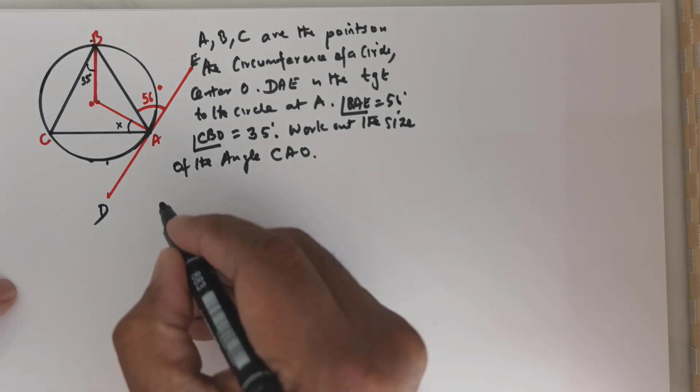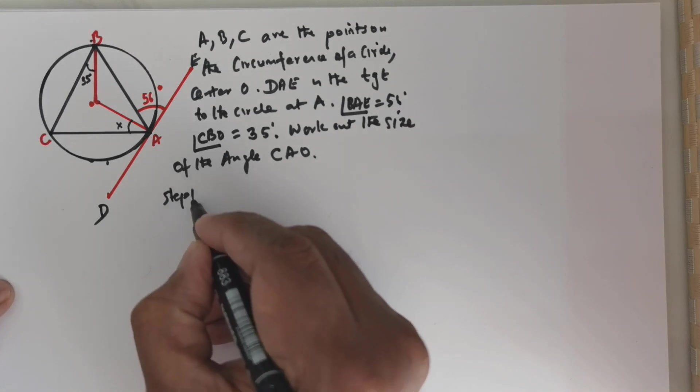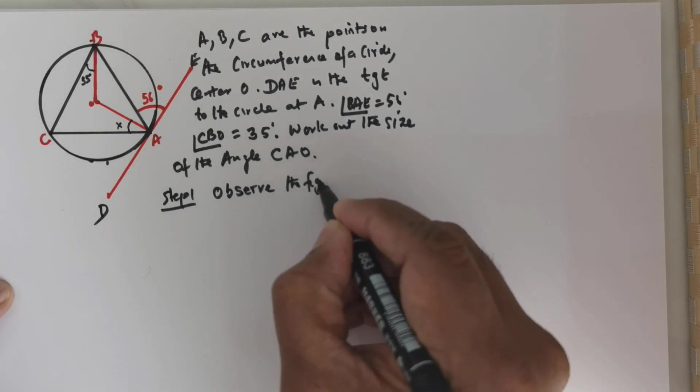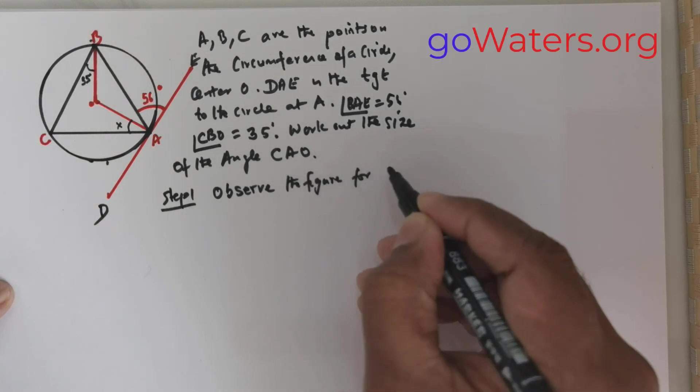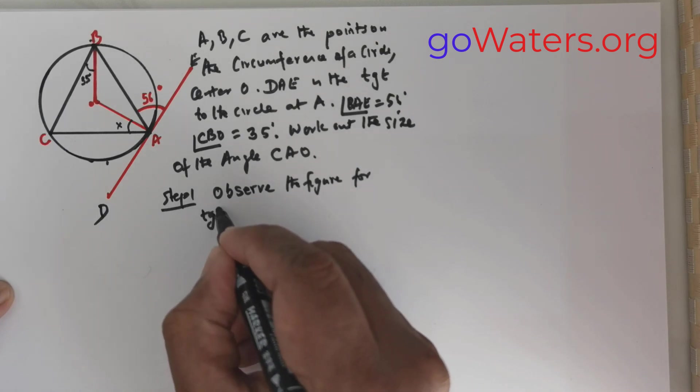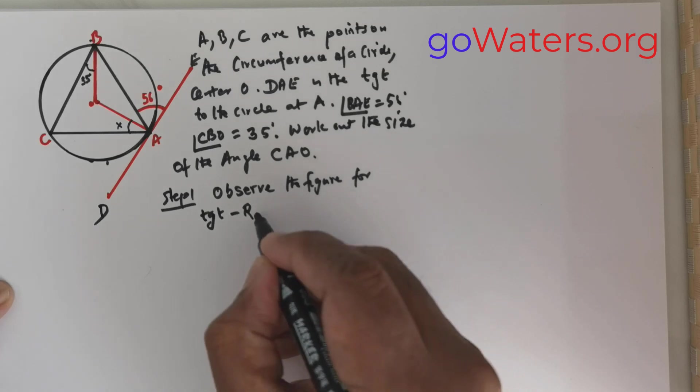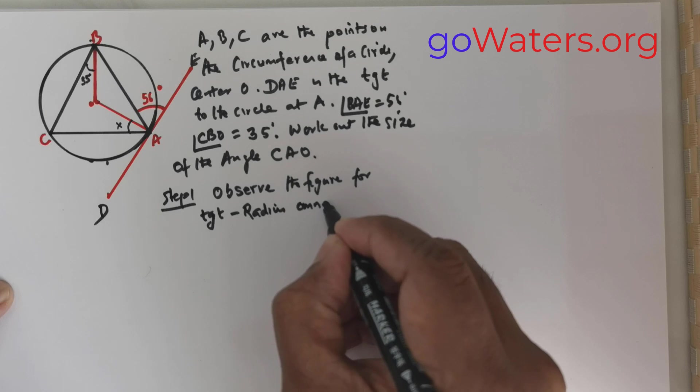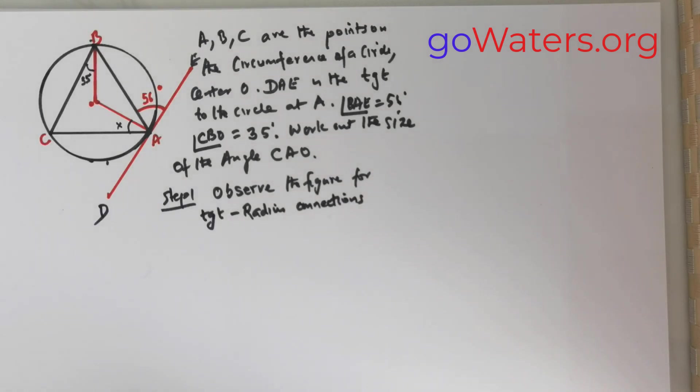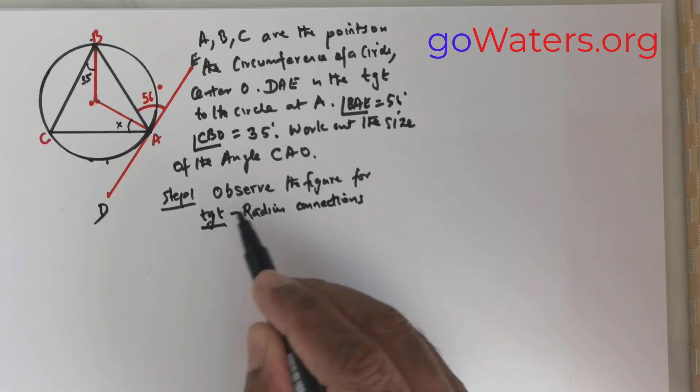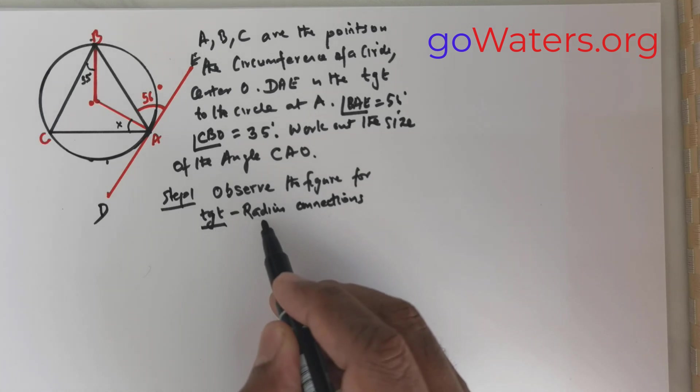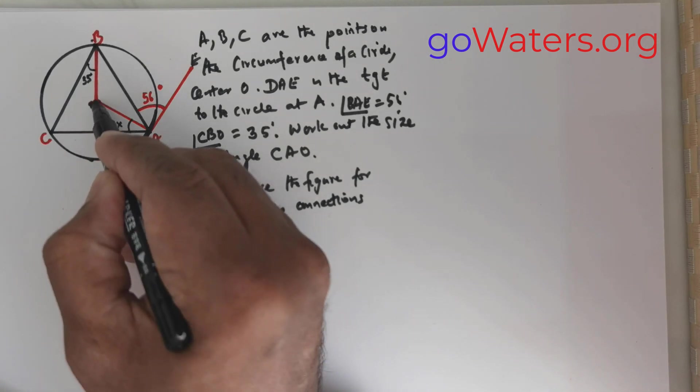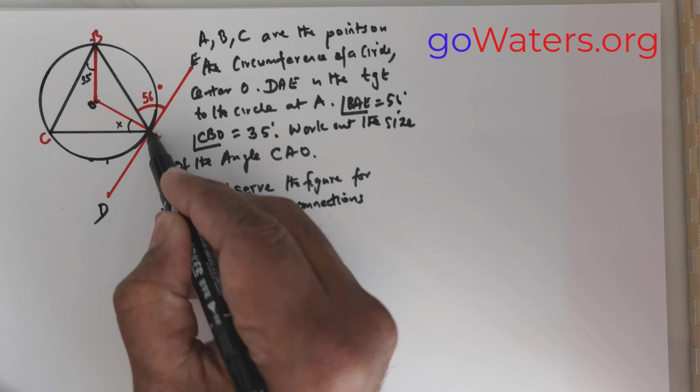Now foremost, what you need to do, step one, observe the figure for what? For tangent radius connections. So whenever you observe a tangent, next go up and check if there is a radius connecting with a tangent. Now if it does, clearly you can see this point is given as O. So from O to a point on the circumference, O is the center to any point on the circumference will be a radius.